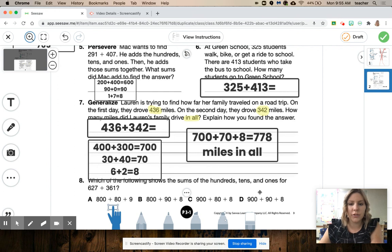Which of the following shows the sums of the hundreds, tens, and ones for 627 plus 361? So it's asking when we get to this point and we're adding them together, what would that look like? If you need to pause and rewatch the video, please do so. That's why I spend the time making these for you guys. So that you can rewatch it. You can pause it. You can think about it. Okay. Make sure that you watch this a couple of times if you need to. And I will see you in math class.